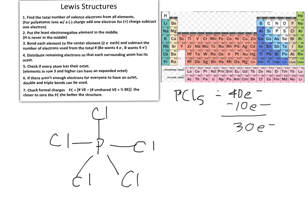Those 30 electrons are distributed to the exterior chlorine atoms, 6 electrons to each — using all 30. We now have no more electrons to distribute.